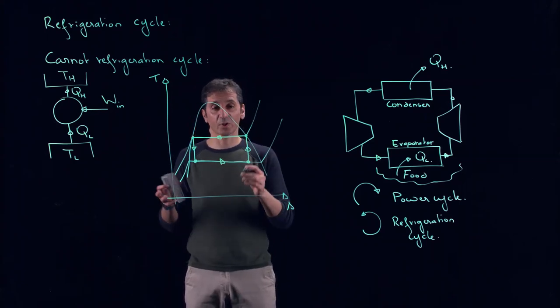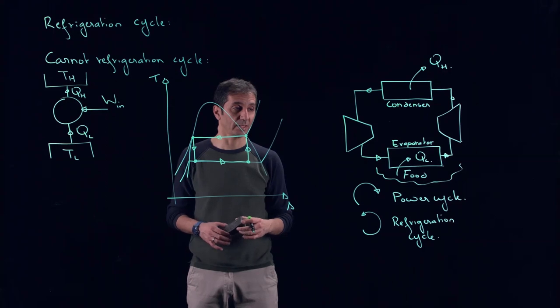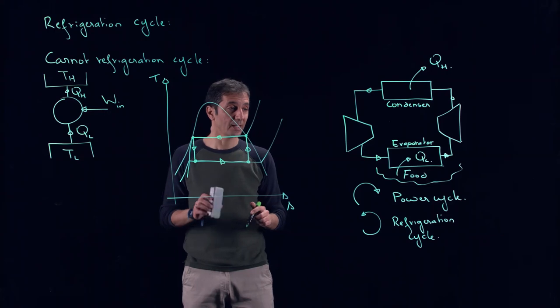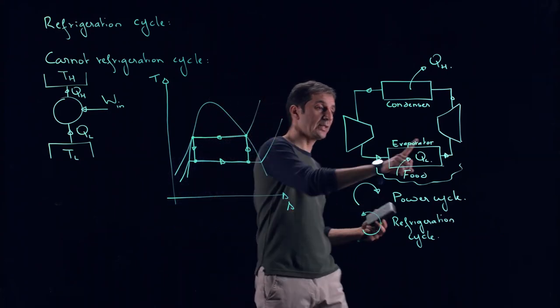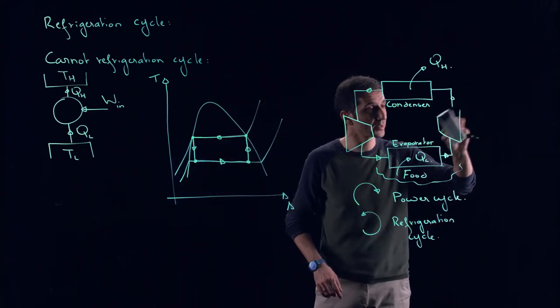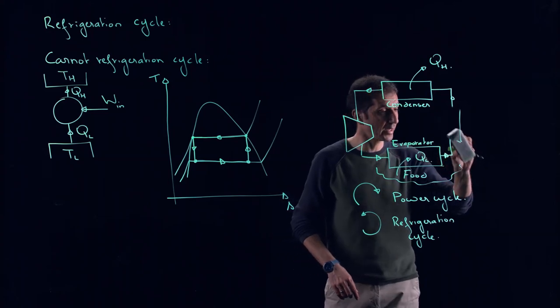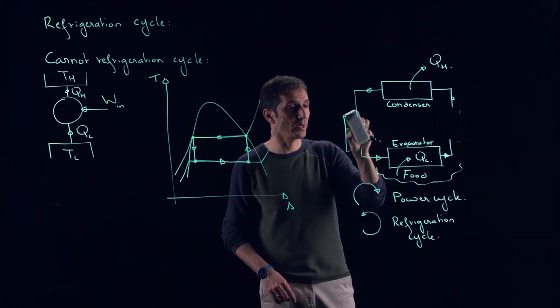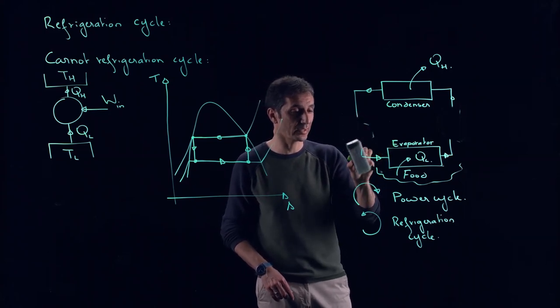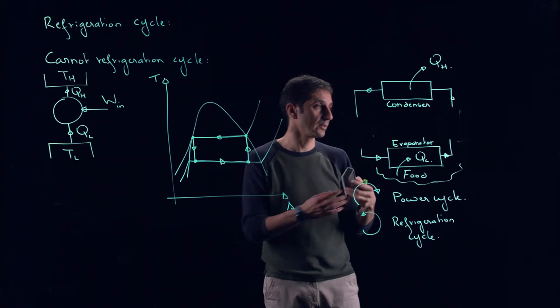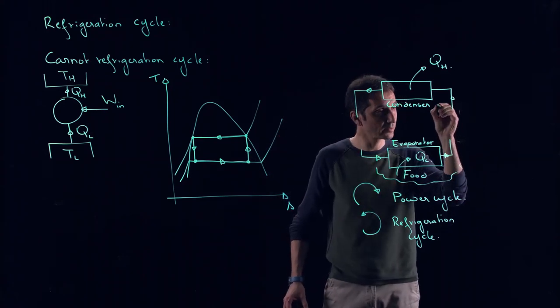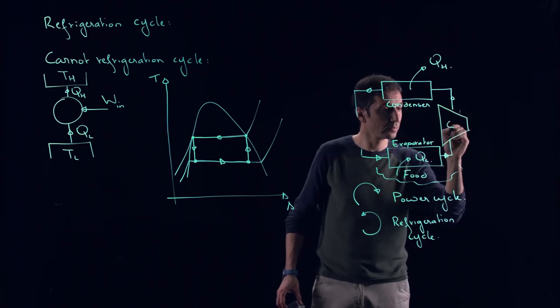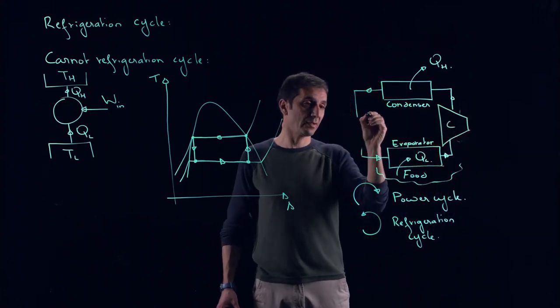Now, why is there a problem with our Carnot cycle? We can identify different issues, and one of them is that now we are providing work here, so this one becomes our compressor, and this one becomes our turbine. We are running it in the other direction. So here now, we have our compressor, and here, we will have our turbine.